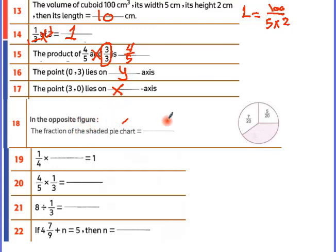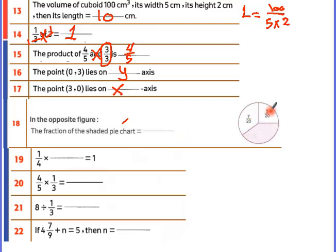In the opposite figure: 7 over 20 and 5 over 20 are the fractions. The whole circle has denominator 20. So 20 minus 7 minus 5 — those sum to 12 — then 20 minus 12 equals 8. The remaining fraction is 8 over 20.